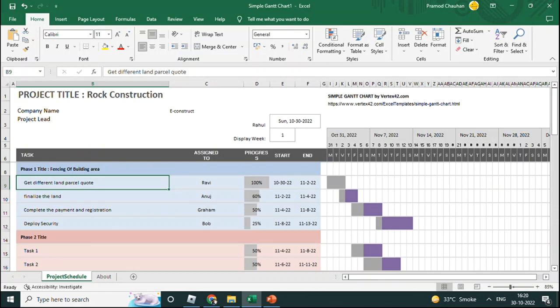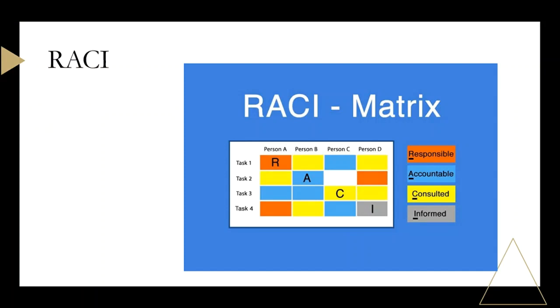The next point is the RACI matrix. Once you are done with all the activities, you create a RACI matrix. RACI stands for Responsible, Accountable, Consulted, and Informed. It is a matrix in Excel where you note down the task numbers and then write the name of the person or the department who is responsible. For a small team you use names; for a big project you also add the department.